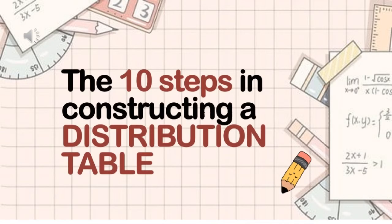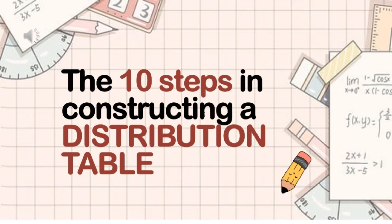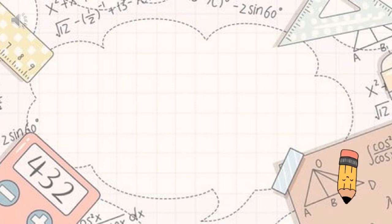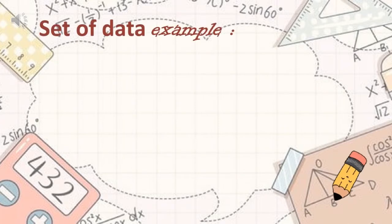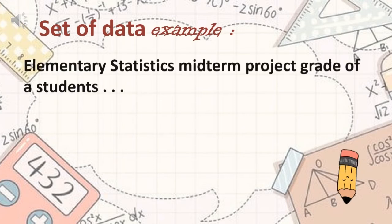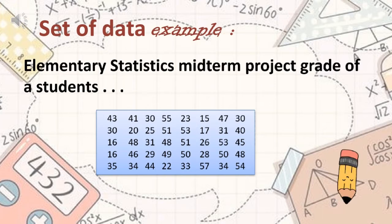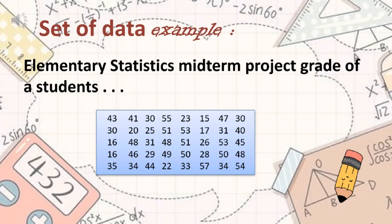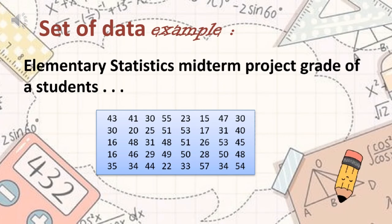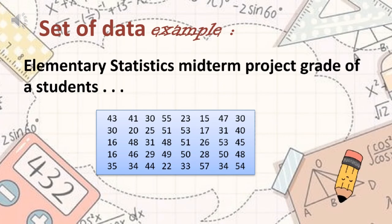In constructing a frequency distribution table, there are 10 steps that we must follow. We have here our set of data in the example. These are the grades of the students in the remitter project in elementary statistics subject. As you can see, there are 40 students. For us to construct our frequency distribution table, the first thing we need to do is to convert this raw data into array form.